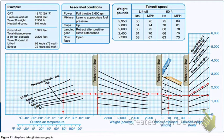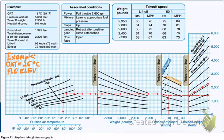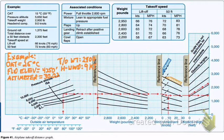Moving on to our takeoff distance chart, coming straight out of the FAA test supplement, we'll establish our conditions. Our outside air temperature is 25 degrees centigrade. Field elevation is 4,250 feet. Our altimeter setting is 3002. Takeoff weight of 2,800 pounds. And our headwind from our previous chart will be 9 knots.